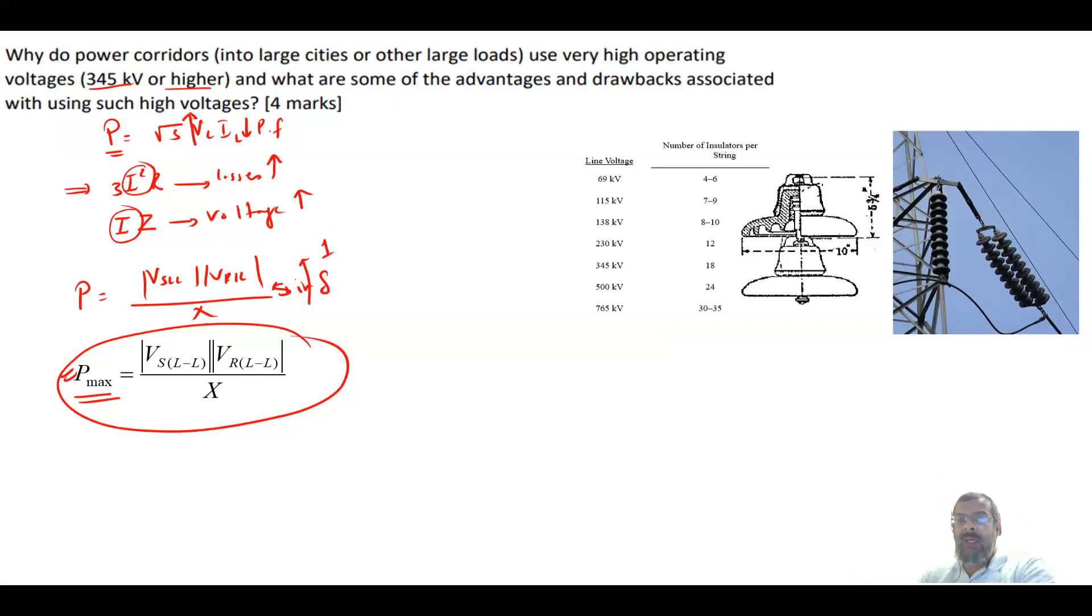For example here these are what we call cap and pin insulators, so you just cascade them. As you are increasing the voltage level here, 69 kV, 115, 138, and so on and so forth, the number of strings will increase. You need to have a larger distance between the high voltage and the grounded tower to avoid any flashover, so you need longer string of insulators. Even if you use polymer insulators, although they come as one long rod, you still need to have longer insulators.